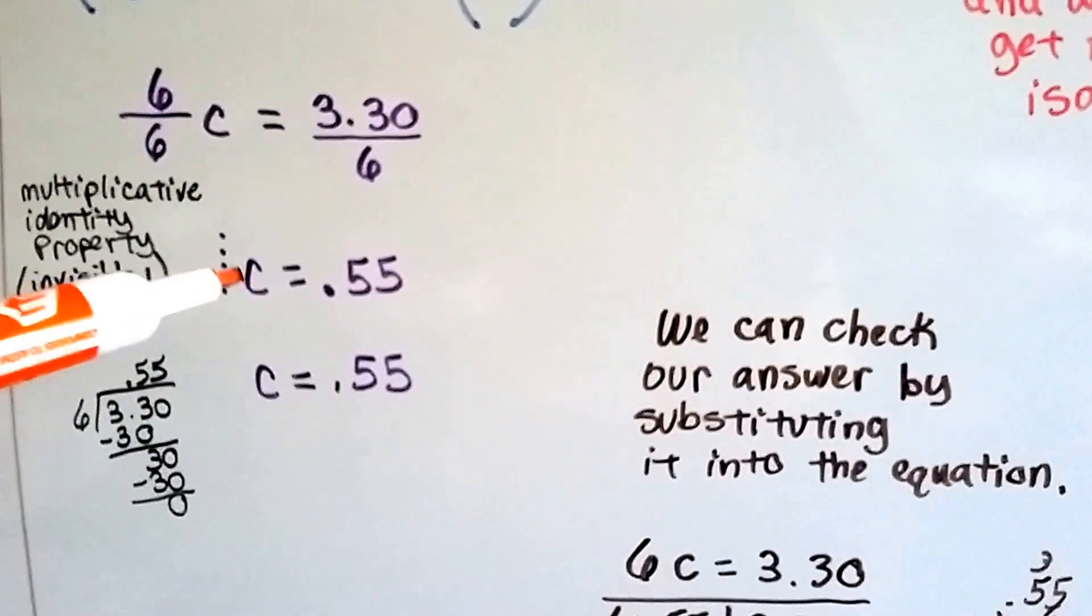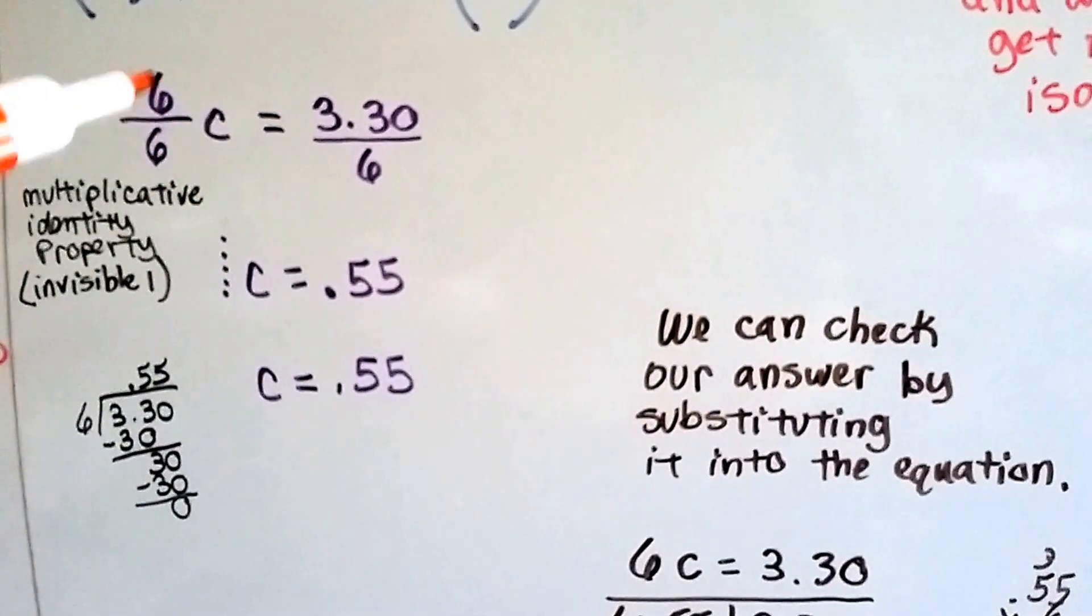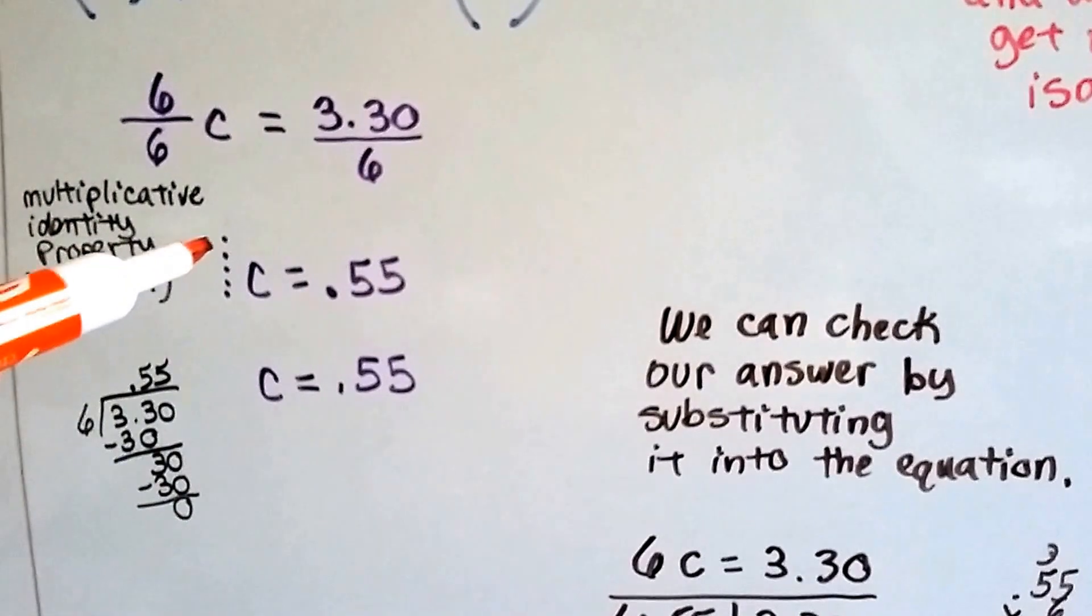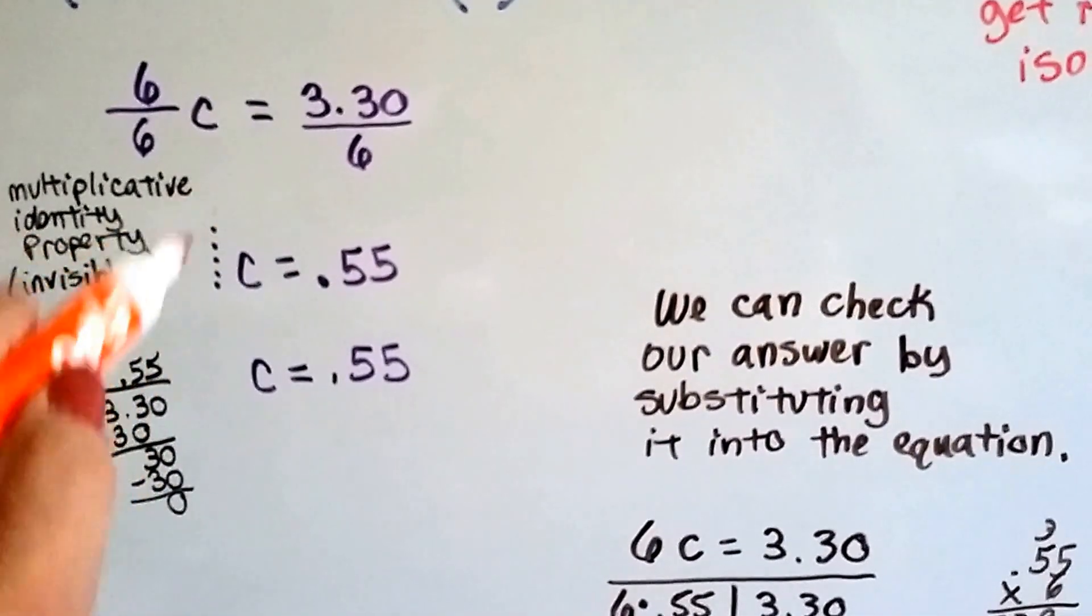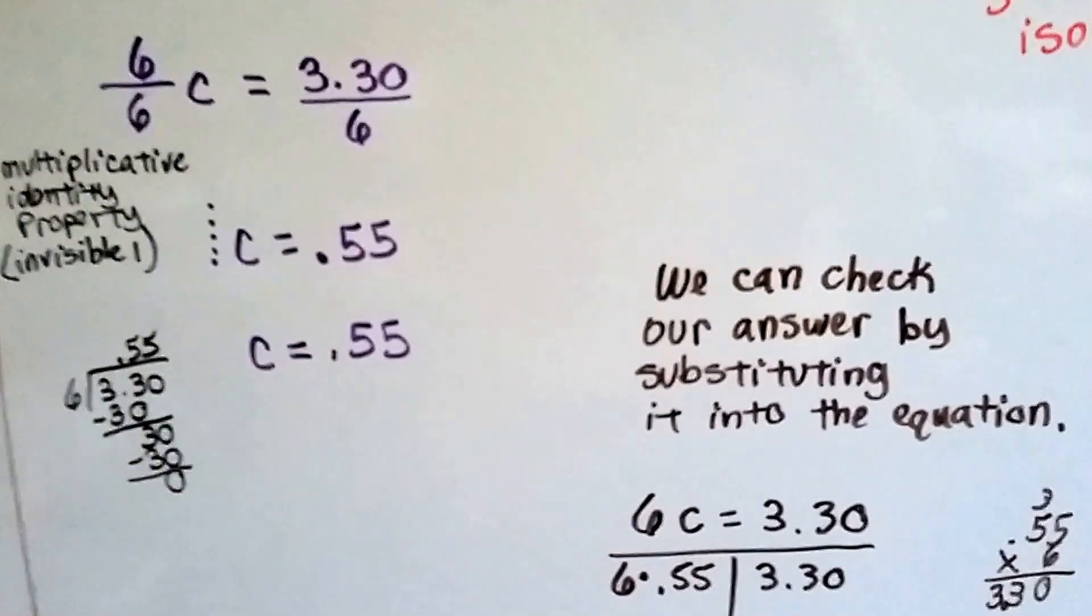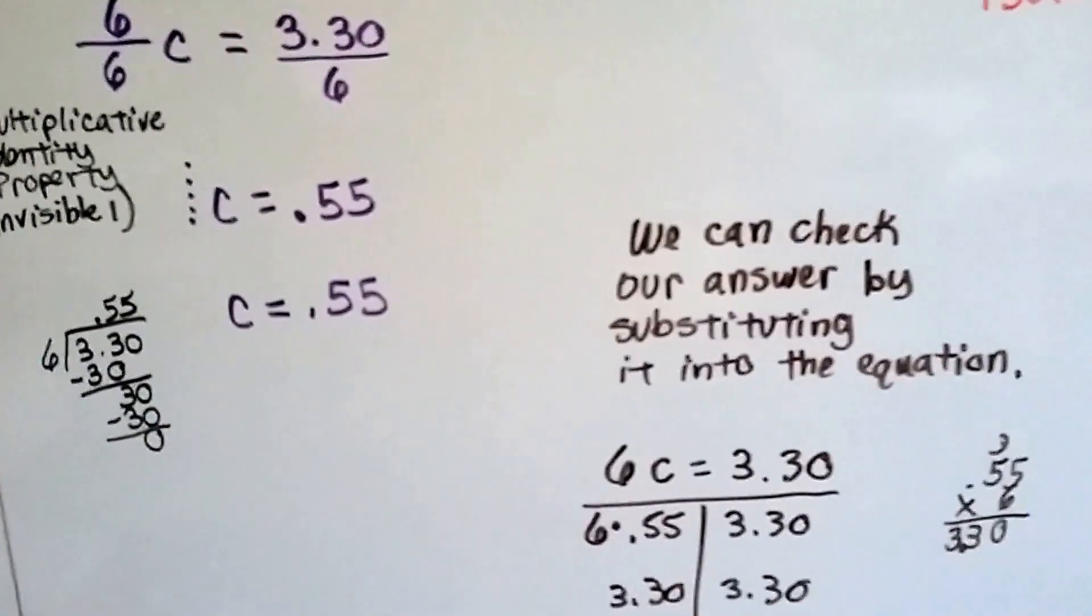So we know that one C, because this turns into a one because the numerator and denominator are the same, one C is equal to .55. So we don't need to write our friend the invisible one. So just C equals .55. So it's 55 cents per can.